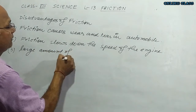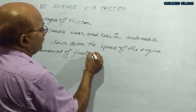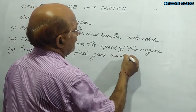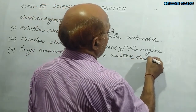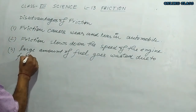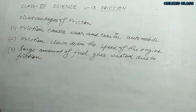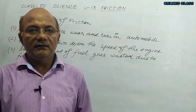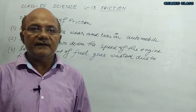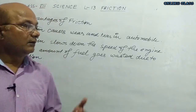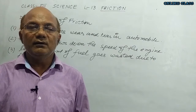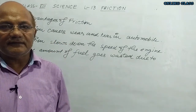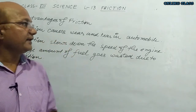A large amount of fuel goes wasted due to friction. When there is friction in the moving parts of a machine, it decreases the efficiency of the machine, and so a large amount of fuel goes wasted. So friction causes wear and tear and reduces efficiency in automobiles.